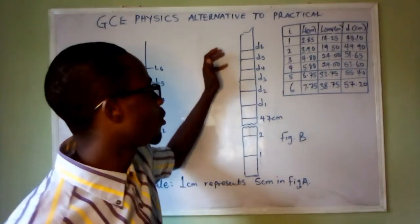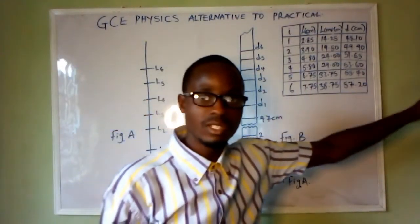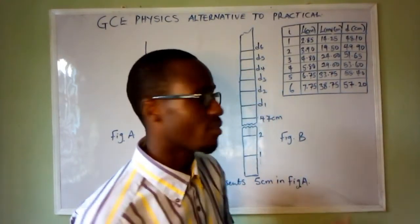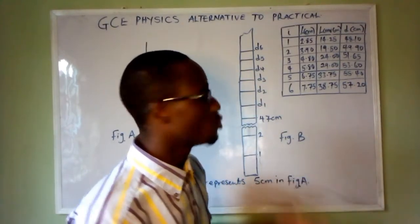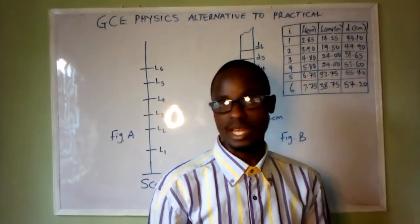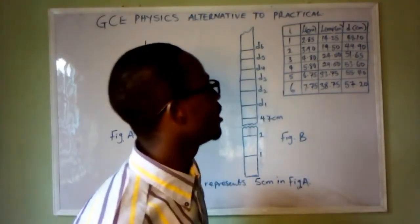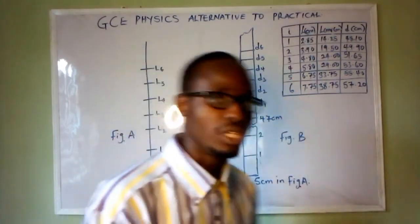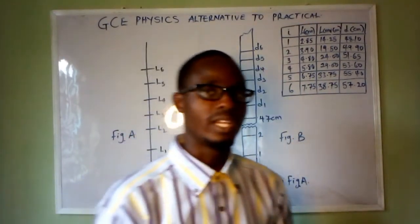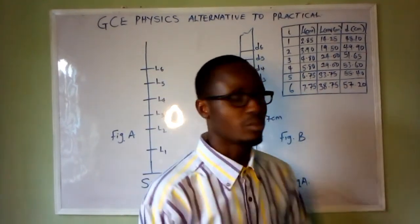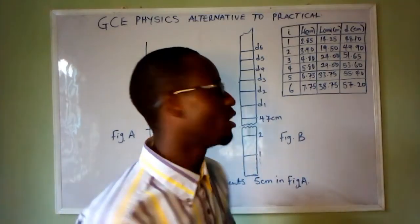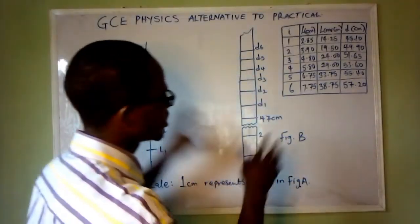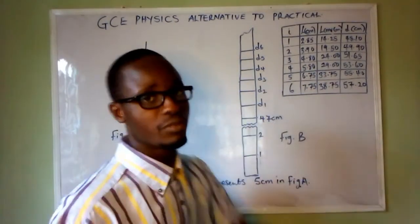I do the same for D4, D5, and D6 to complete the table. All basic rules in physics practical still apply: direct readings are left in two decimal places, and any evaluated quantities are left in three decimal places. Since all these values here are direct readings, they are kept in two decimal places. This is how we generate our table from diagrams — a typical way of doing alternative to practical.